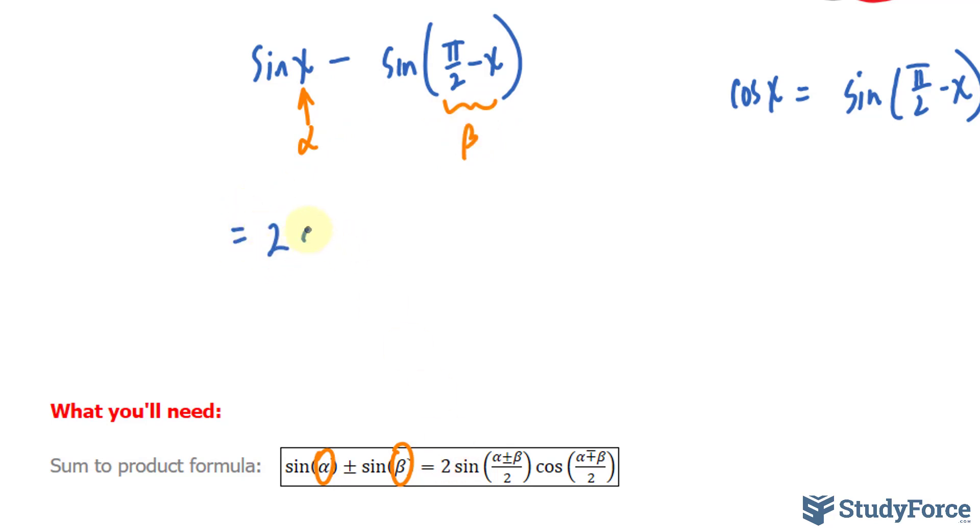And here's how it works. We have 2 sin, our alpha is x. And since these two are being subtracted, then we will have to subtract x minus all of that, π/2 - x, and all that's being divided by 2. And our third factor is cosine.